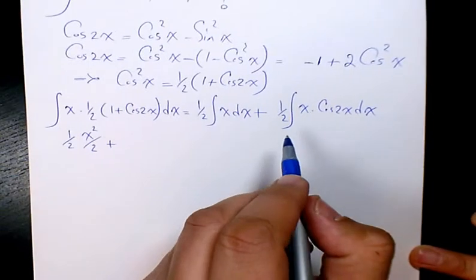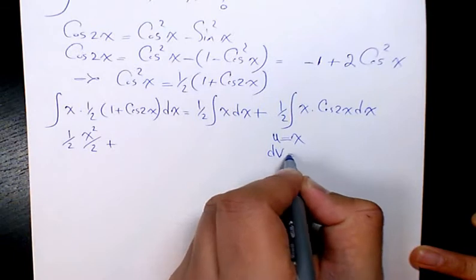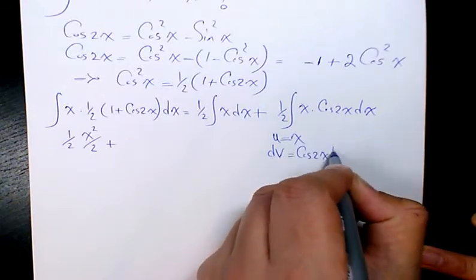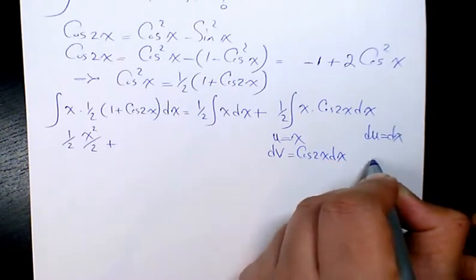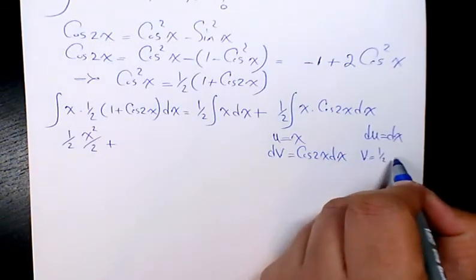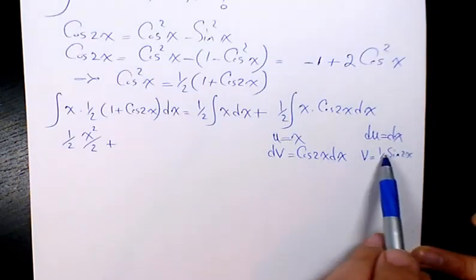So I consider u as x and dv becomes cosine 2x dx. So du will be dx and v will be 1 over 2 sine 2x, because when you do the derivative, it's going to be cosine 2x dx.